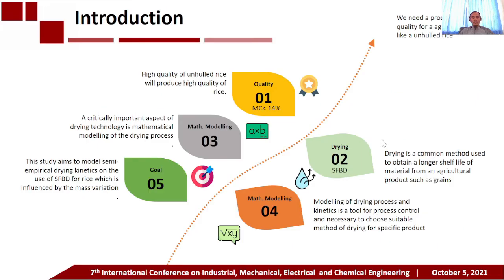For the introduction: we all know that quality is an important factor, especially for agricultural products, because we need good quality for the next step of processing, or we need it to offset a longer shelf life of the material. In this case, we talk about the drying process of unharvested rice. A critically important aspect of drying technology is mathematical modeling of the drying process. Modeling of drying process kinetics is a tool for process control and the means to choose a suitable method of drying for a specific product.